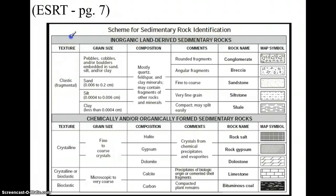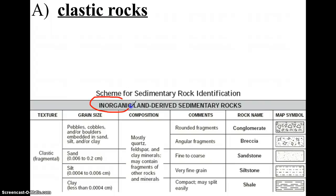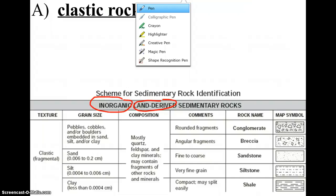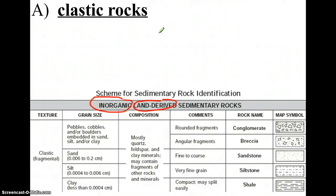You'll notice that the chart is broken up into two sections. We're going to start by exploring the top part of the chart, which are rocks that are inorganic and land-derived. Inorganic means not living or never living. Land-derived means they come from land. So all of these rocks in the top section come from existing land — basically rocks that are not living and were never alive.